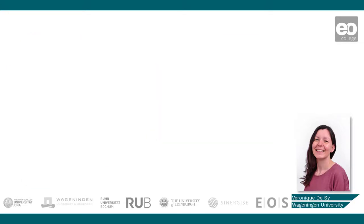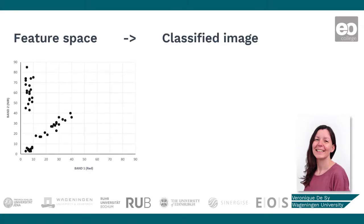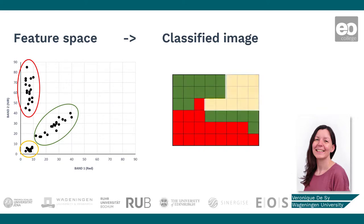So how do we go from the feature space to a classified image? In the feature space plot on the left, we can distinguish three clusters. By assigning labels to these clusters according to some rule or classification algorithm, and then situating these labeled pixels again in the image space, we end up with a classified image.